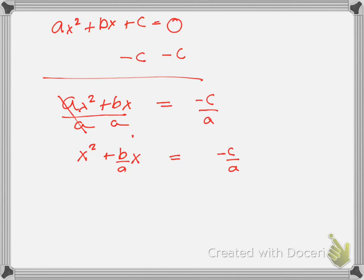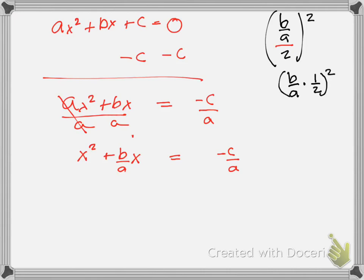Now what? We take the linear term's coefficient, B over A, and divide it by 2 — which really means B over A times one-half — and then square it. That becomes B squared over 4A squared. So I'm adding plus B squared over 4A squared to both sides.